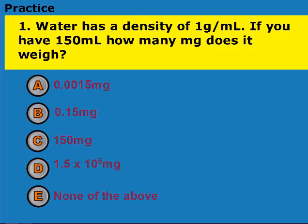Because of that, we can have problems like this where it says the water has a density of 1 gram per milliliter. It can also help you identify what your substance is if you can determine its density. So in this problem, it says I have 150 milliliters — so how many milligrams does it weigh?